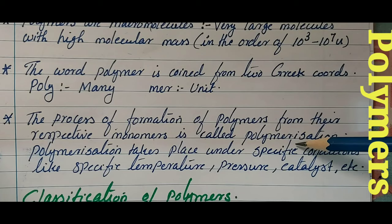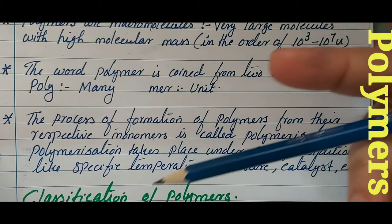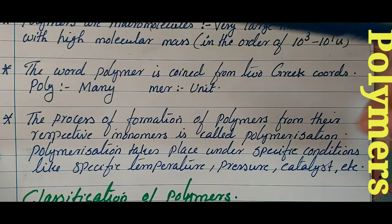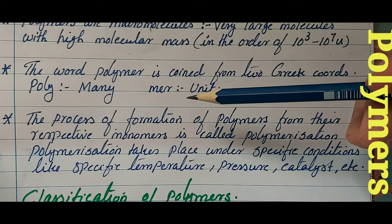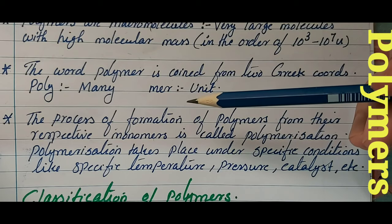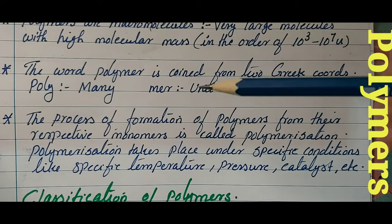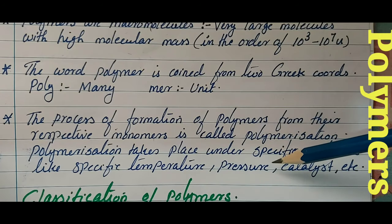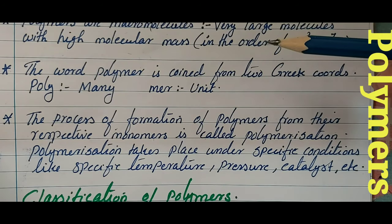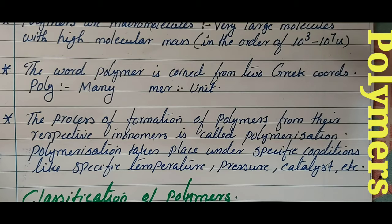The process of formation of polymers from their respective monomers is called polymerization. Simply combining two monomers won't form a polymer — you have to apply specific conditions like specific temperature, pressure, and catalyst; only then will polymerization take place.